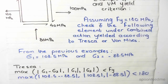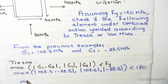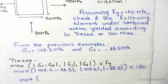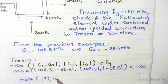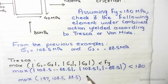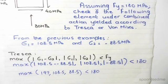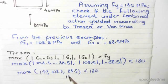So substituting the values of principal stress one and principal stress two, this comes to the maximum of 197, 108.5, and 88.5, is less than 180. We look at the maximum value. In this case we have 197, so 197 is not less than 180.